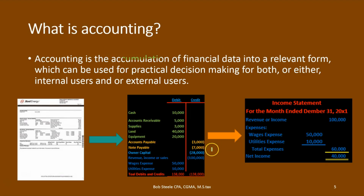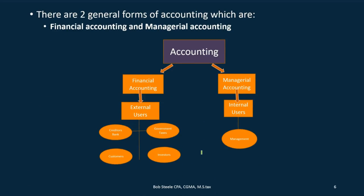We put data in, store it, and make it into financial statements. There are two general forms of accounting: financial accounting and managerial accounting. Financial accounting deals with creating financial statements — inputting and organizing the data — and those statements are for external users like the bank, the government, customers, and investors. The end goal of financial reporting is really for people outside the company, though management uses it too. Managerial accounting is geared toward internal users and management; we use financial statements but also other measurement techniques, which we'll cover later.